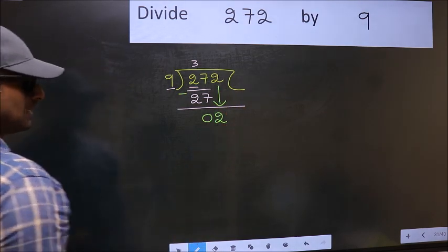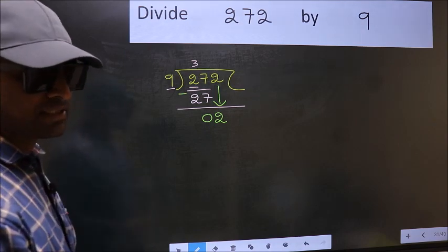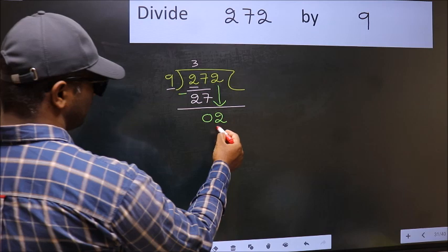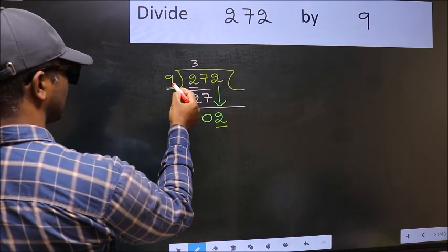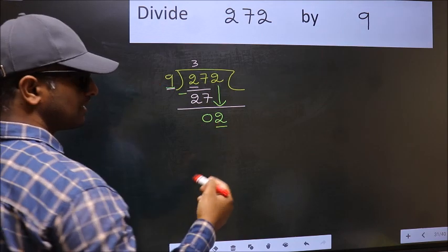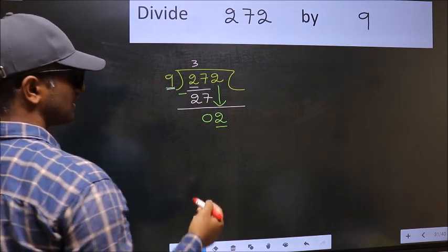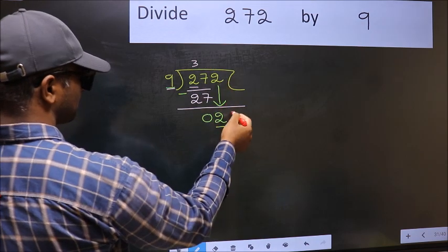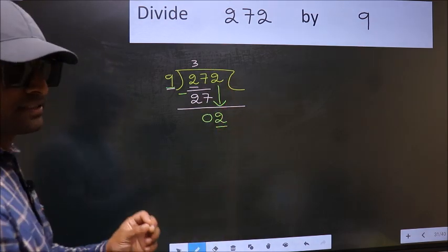After this step, the mistake happens. And the mistake is this: here we have 2 and here 9. 2 is smaller than 9. So what many do is, they directly put the dot and take 0. Which is wrong.